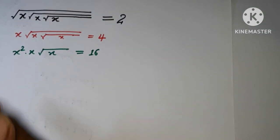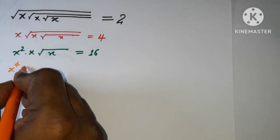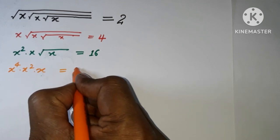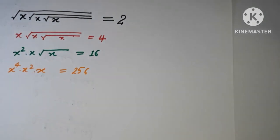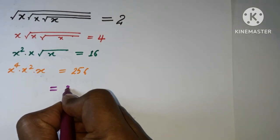Next thing is that I'm squaring on both sides once again. So here power 4, here is square, and here x, and here 256. We know that 256 is the power of 2, which is 2 to the power 8.